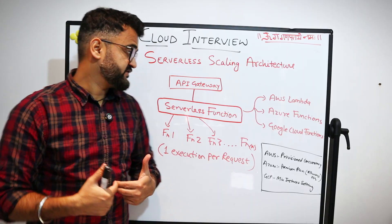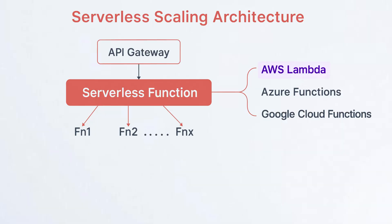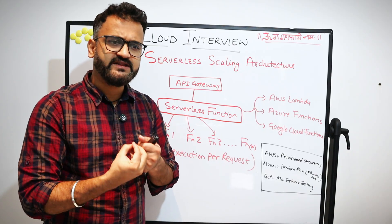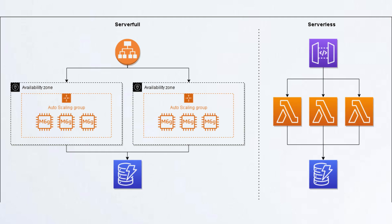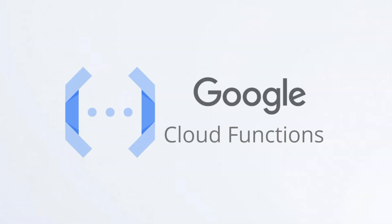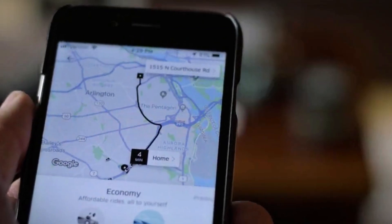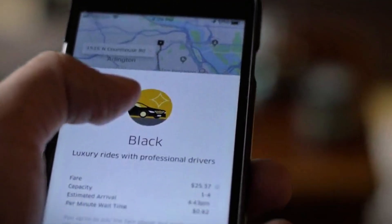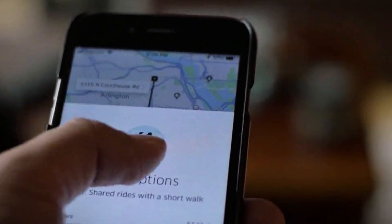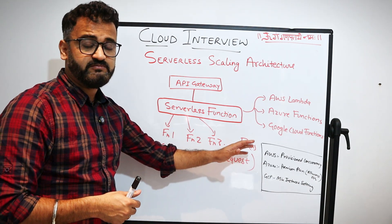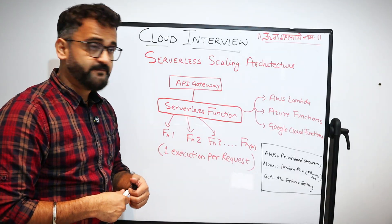Now let's understand serverless scaling architecture. Serverless functions like AWS Lambda, Azure Functions, and Google Cloud Functions are function as a service — you don't manage infrastructure. You just define what the function has to do; it executes a clear, isolated task and then goes back to sleep. For example, in Uber, every passenger request for a cab is a very isolated execution specific to that particular passenger — that is what a serverless function does.